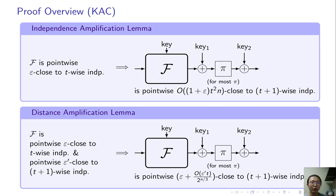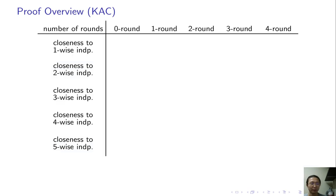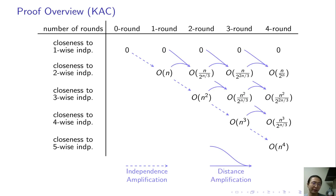Now we are ready to prove our KAC result. This is the two-dimensional induction I show in a table. The base case is one-wise independence. Any round of KAC is one-wise independent. Applying the independence amplification lemma, R round KAC is somewhat close to R-plus-1-wise independence. Then, apply the distance amplification lemma. By adding a few more rounds, somewhat closeness will become very close. This concludes the proof.